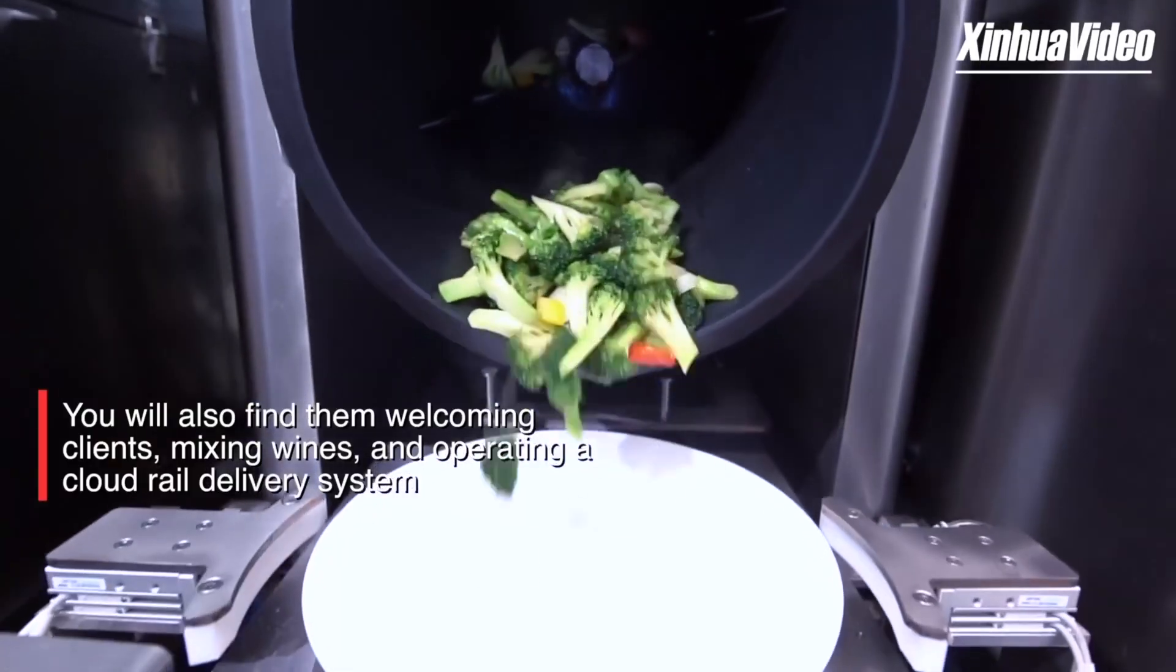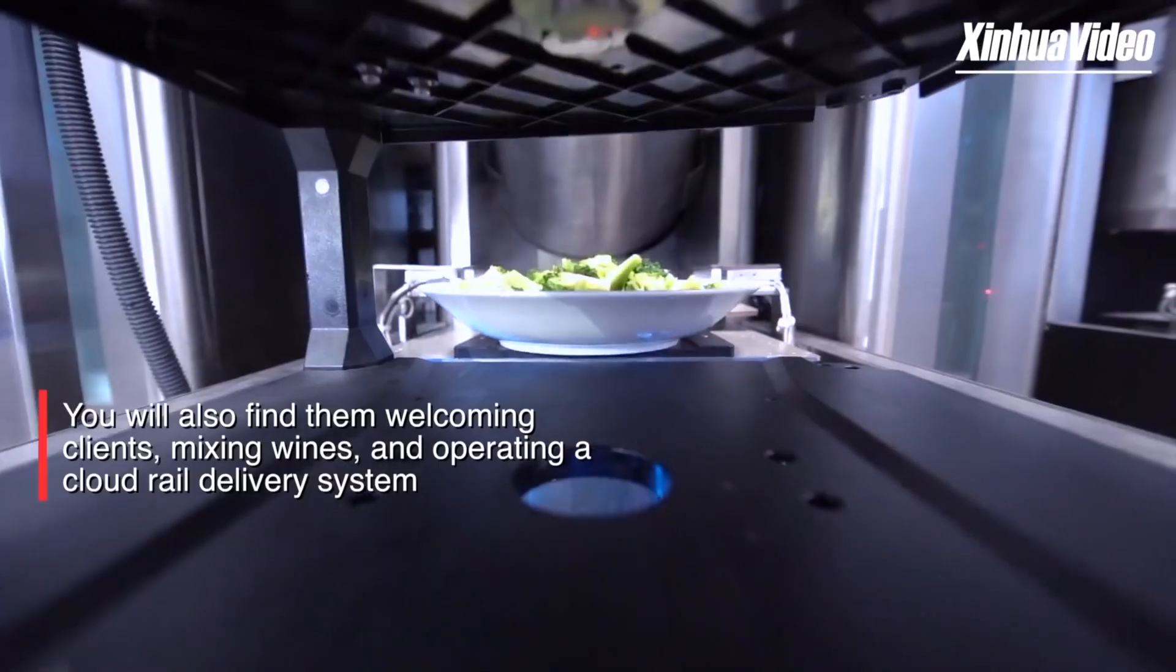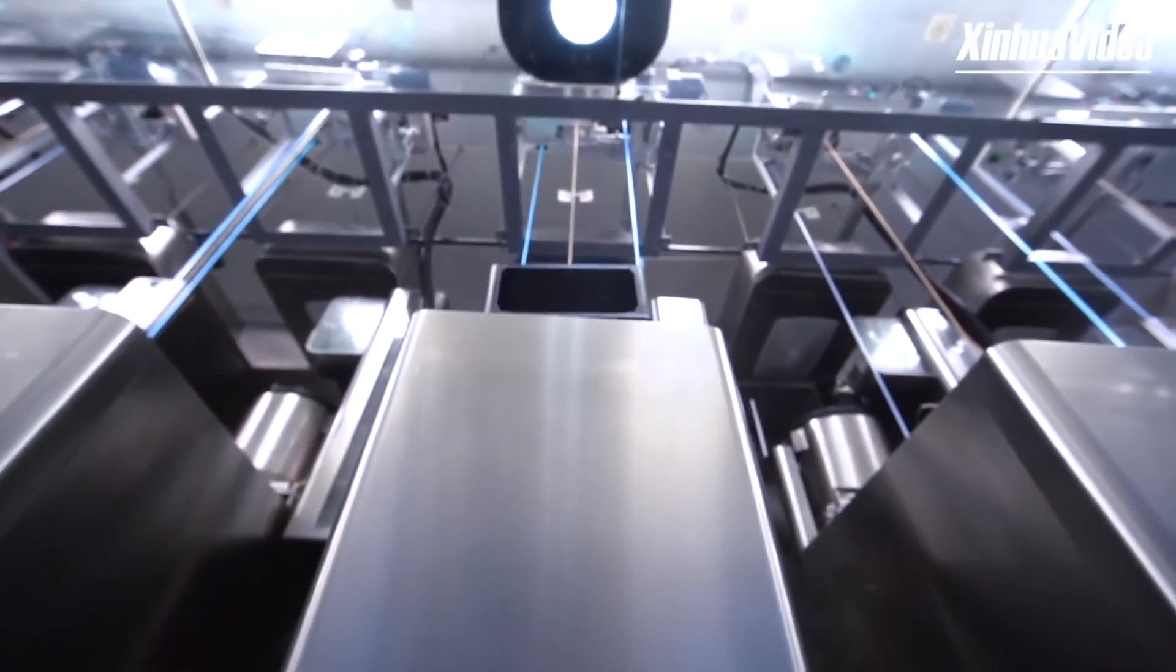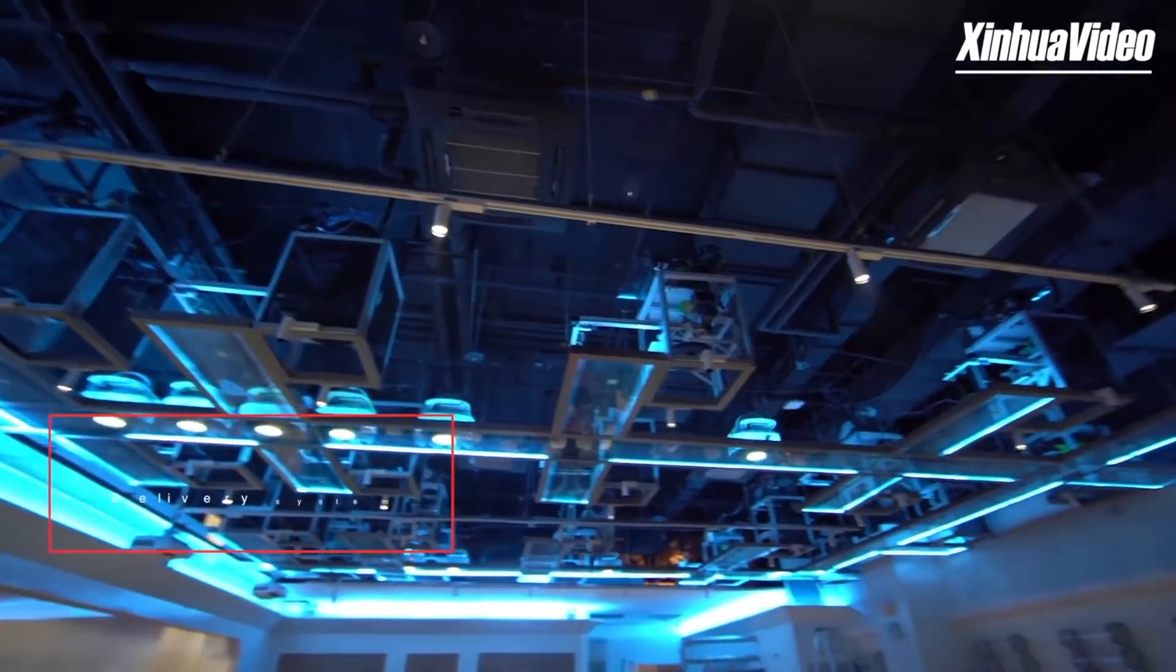Customers can watch the robots make their food in the kitchen via transparent glass walls. Payments are taken using a technology Country Garden developed independently. Everything automated.